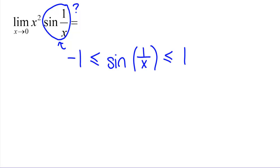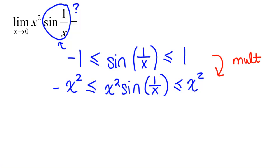So if sine of 1 over x has to be between negative 1 and 1, then the function we care about, which is x squared sine of 1 over x, has got to be less than or equal to x squared and bigger than or equal to negative x squared. So what I've done here in this step is I've multiplied both sides by x squared. And I want to caution you that this works because x squared is positive. If you have something negative and you're multiplying through, that reverses these inequalities.